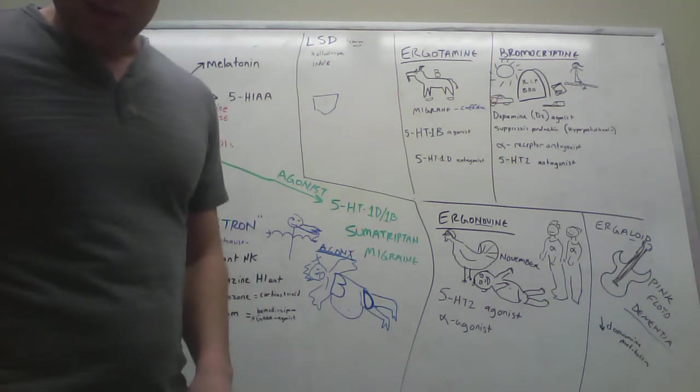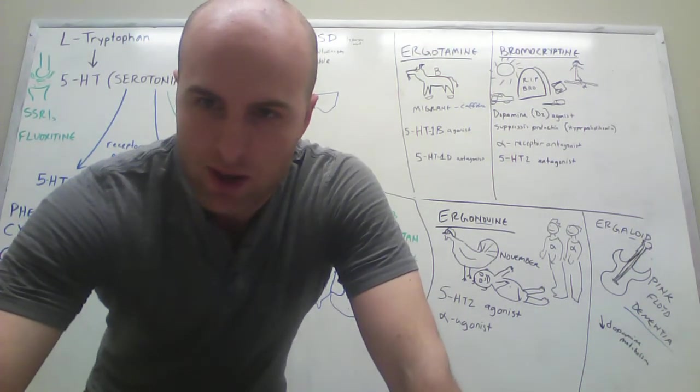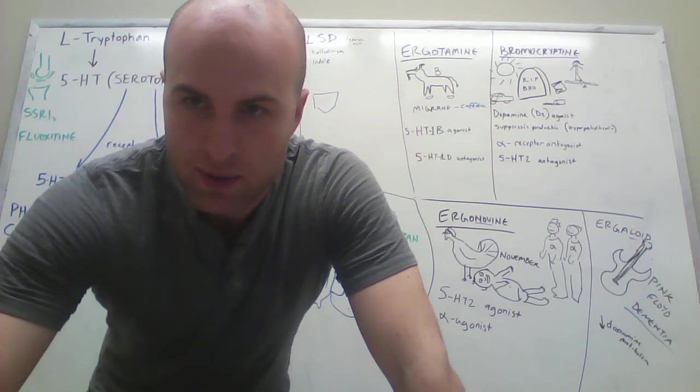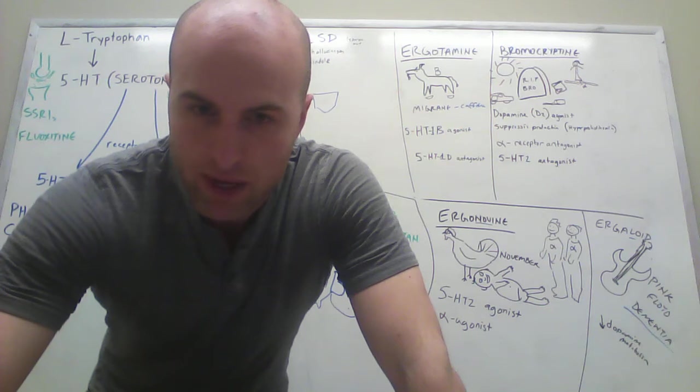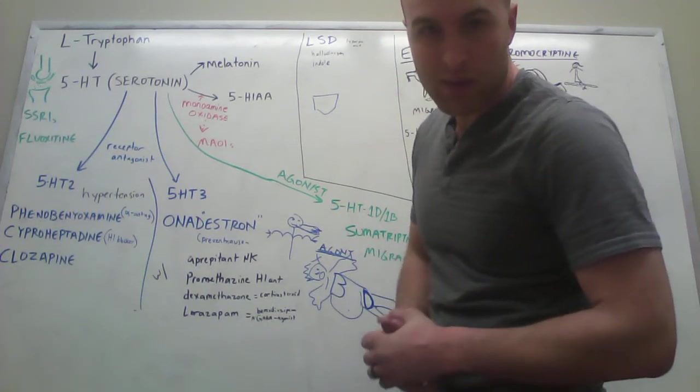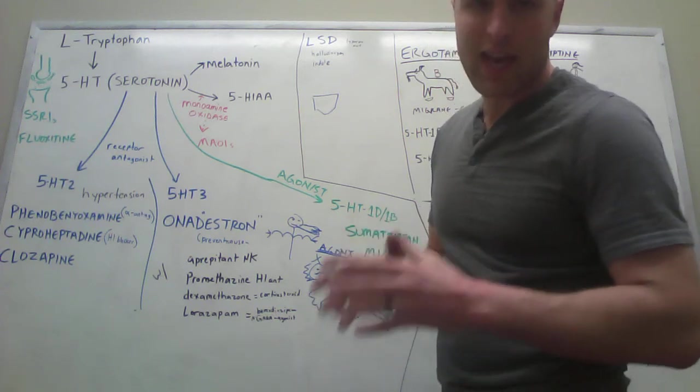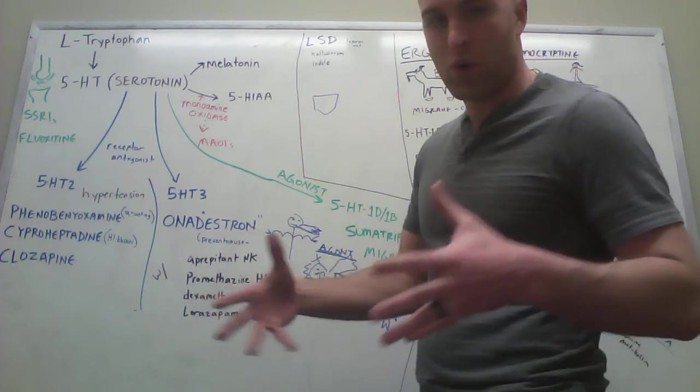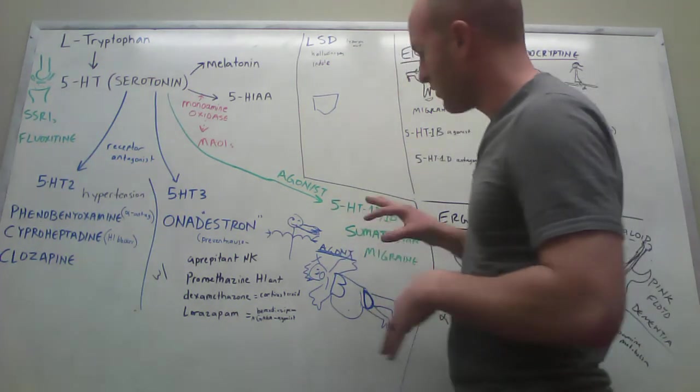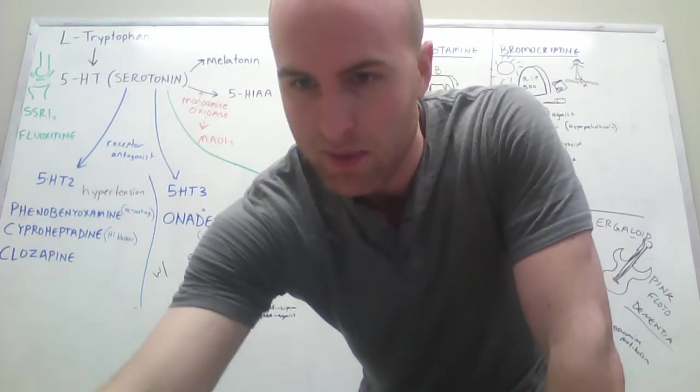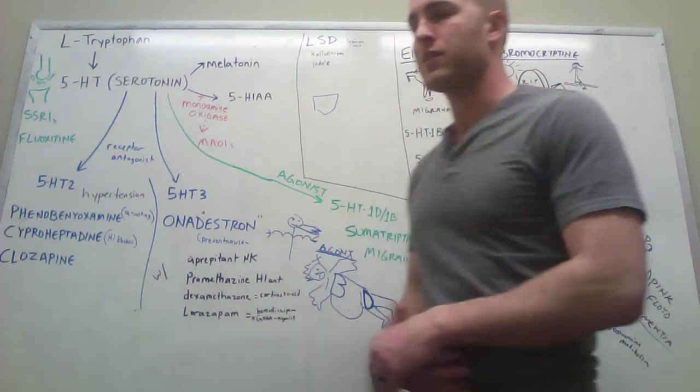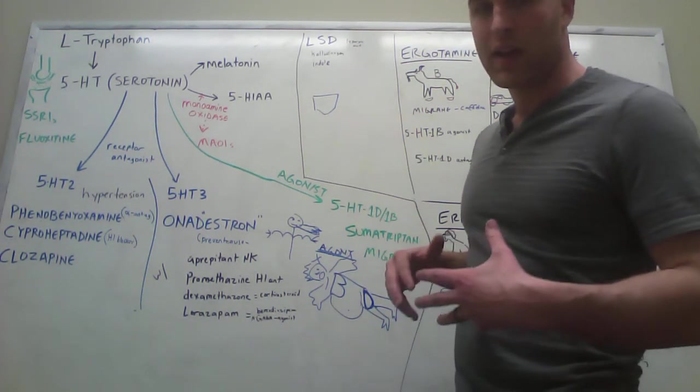I have like two minutes left to cover the last little bit. The 5-HT1D/1B agonist - the way that it inhibits these migraines, I guess it inhibits trigeminal nerve excitability. It's very selective. It has 10 times the vasodilation of the blood vessels in your head as it does in your heart, which is good. But you can be careful giving these to people because they can have really bad side effects. Like if they had a myocardial infarction or a stroke or something in the past, anything that cuts off blood.